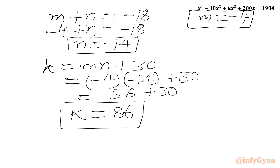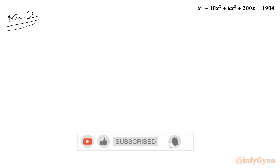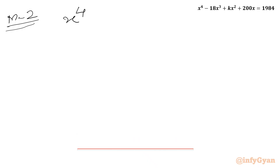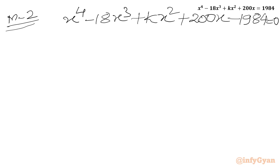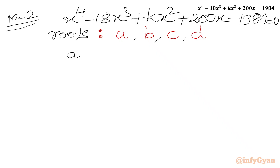Now we consider Method 2, where we use Vieta's method. Writing the equation: x^4 minus 18x^3 plus kx^2 plus 200x minus 1984 equals 0. With roots A, B, C and D, the sum of roots A plus B plus C plus D equals 18.